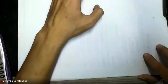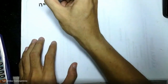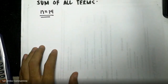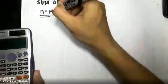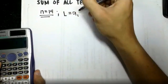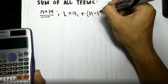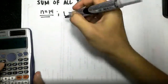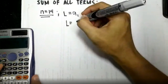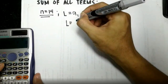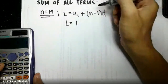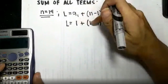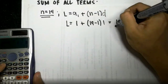Now that we have 14 layers, we can find the last term using LANID: an = a1 + (n − 1) × d = 1 + (14 − 1) × 1 = 1 + 13 = 14. So the last layer has 14 logs.